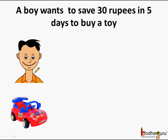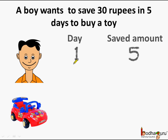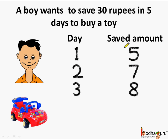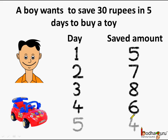A boy wanted to save rupees 30 in 5 days to buy a toy. On the first day he saved rupees 5. The next day he saved 7 rupees. The third day he saved 8 rupees. The fourth day he was able to save 6 rupees, and the fifth day he was able to save 4 rupees. This way, in all, he was able to save rupees 30 in 5 days.